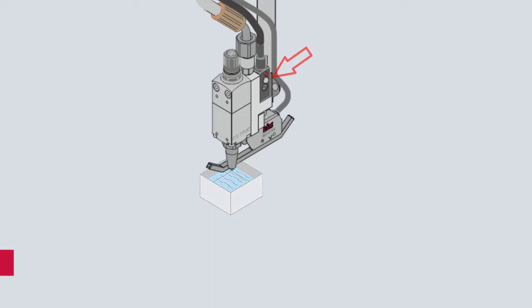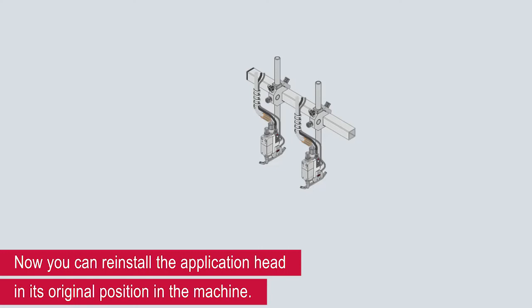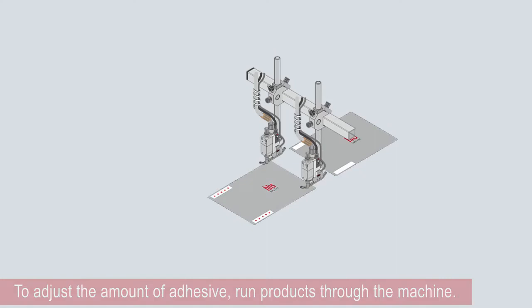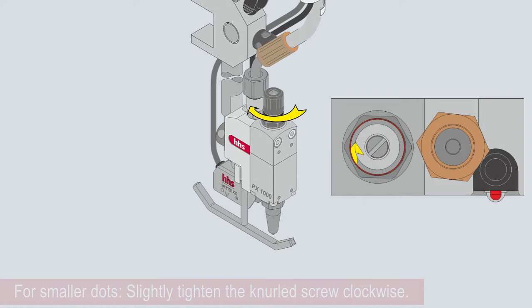Now you can reinstall the application head in its original position in the machine. To adjust the amount of adhesive, run products through the machine. For smaller dots, slightly tighten the knurled screw clockwise. For bigger dots, slightly loosen the knurled screw anti-clockwise.